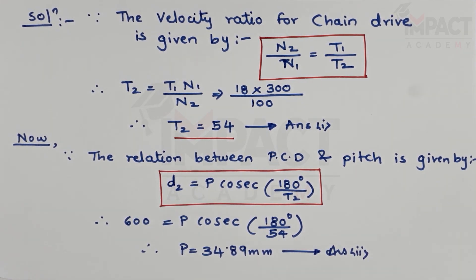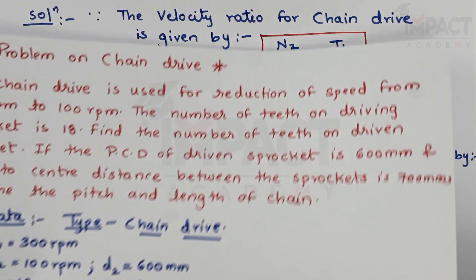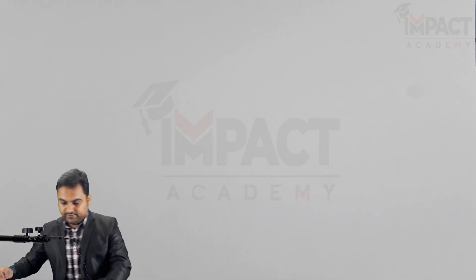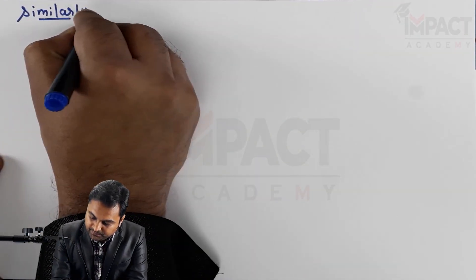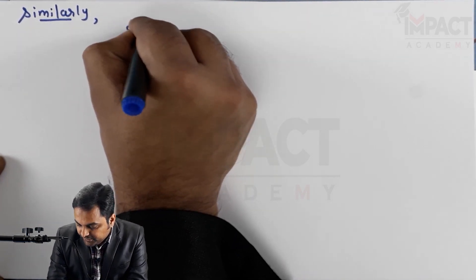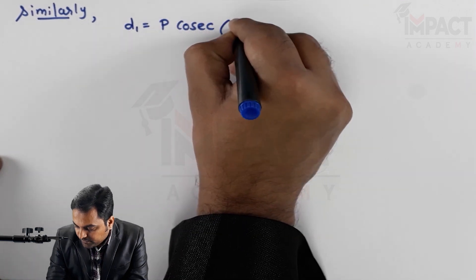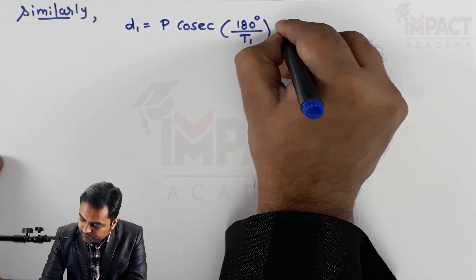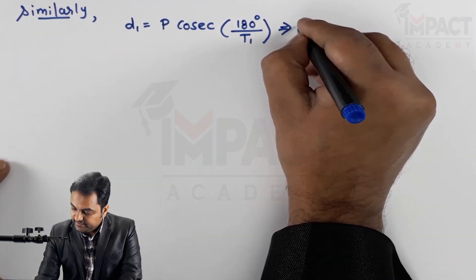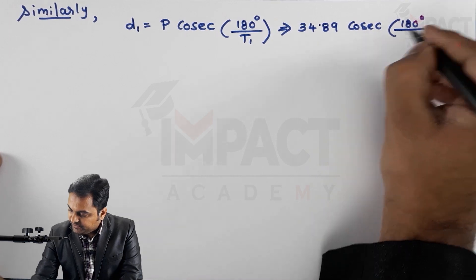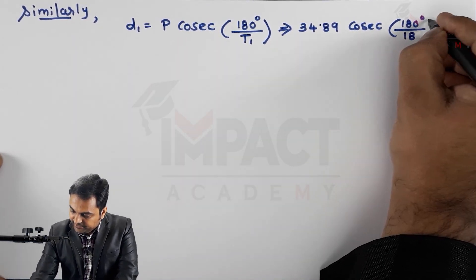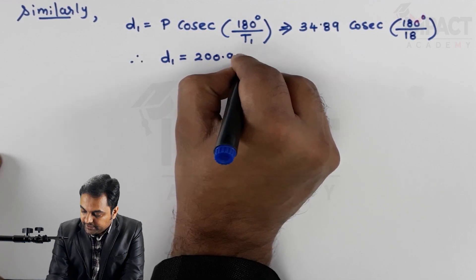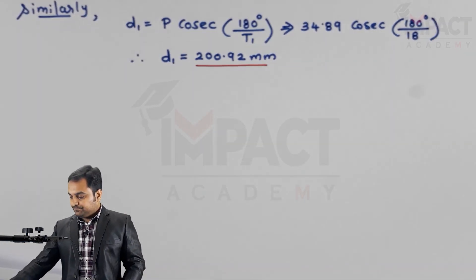After getting the pitch, I'll find the diameter of the driving sprocket d1. Similarly, the PCD formula for the driving sprocket gives d1 = pitch × cosec(180°/t1). With pitch = 34.89 mm and t1 = 18, the answer for d1 comes out to be 200.92 mm.